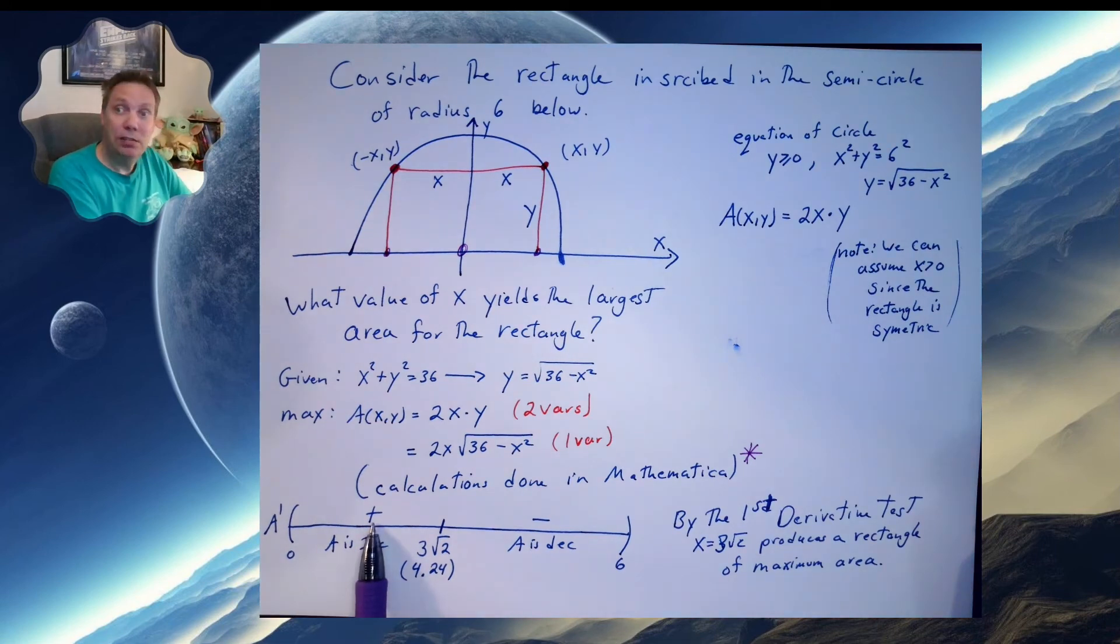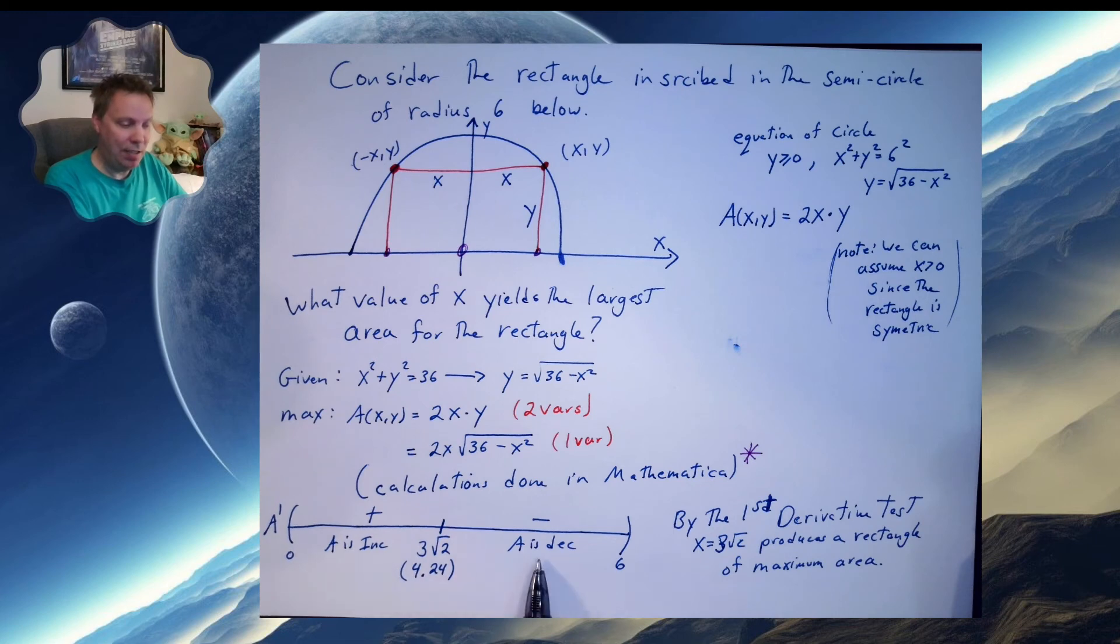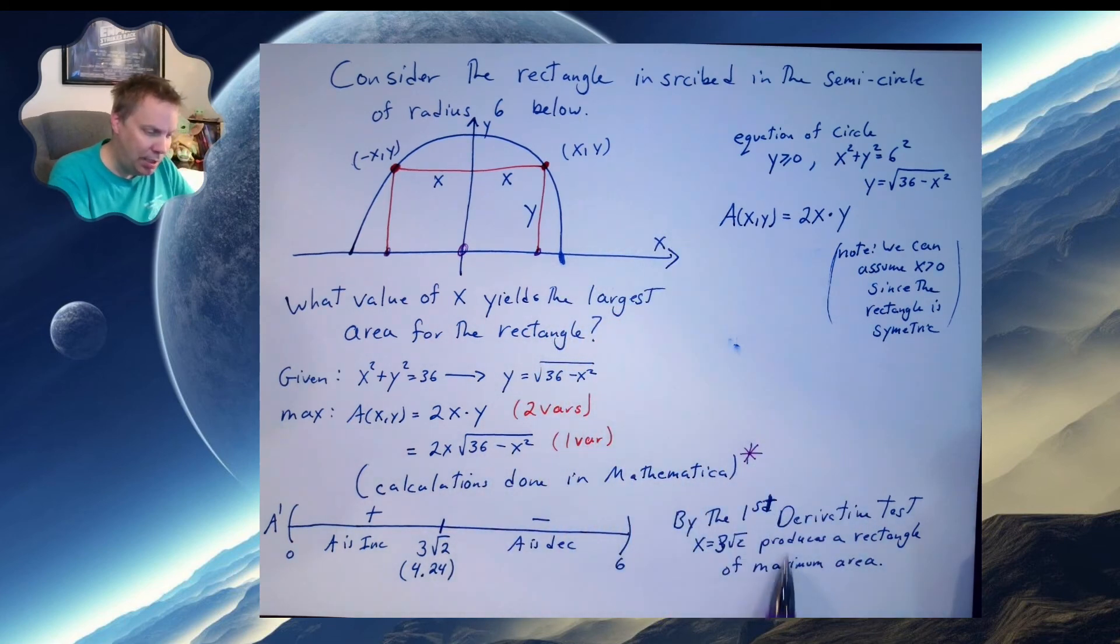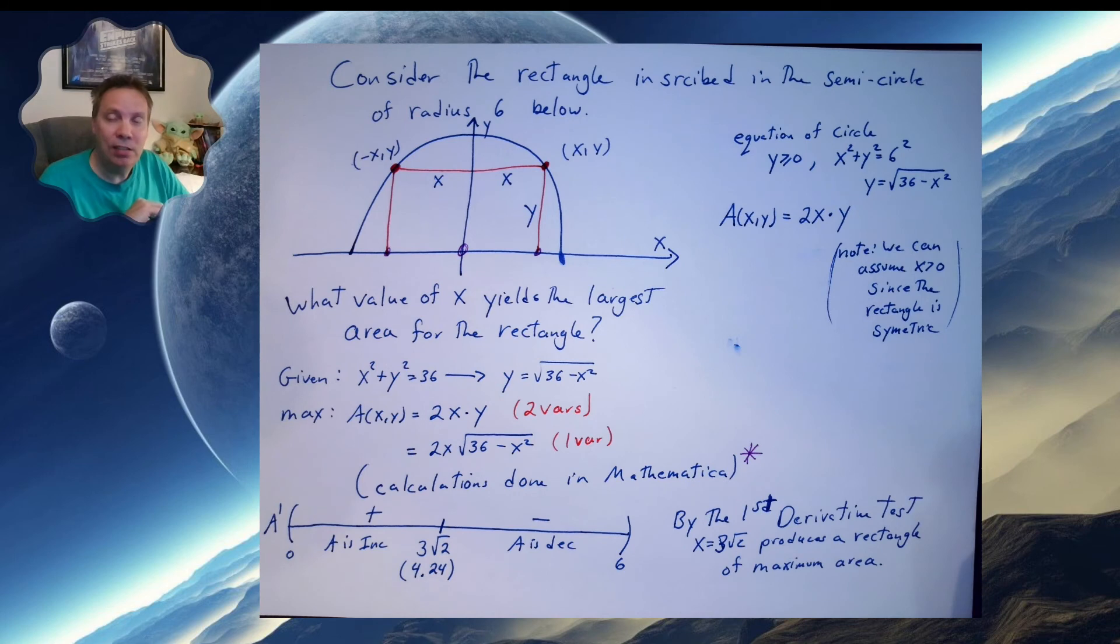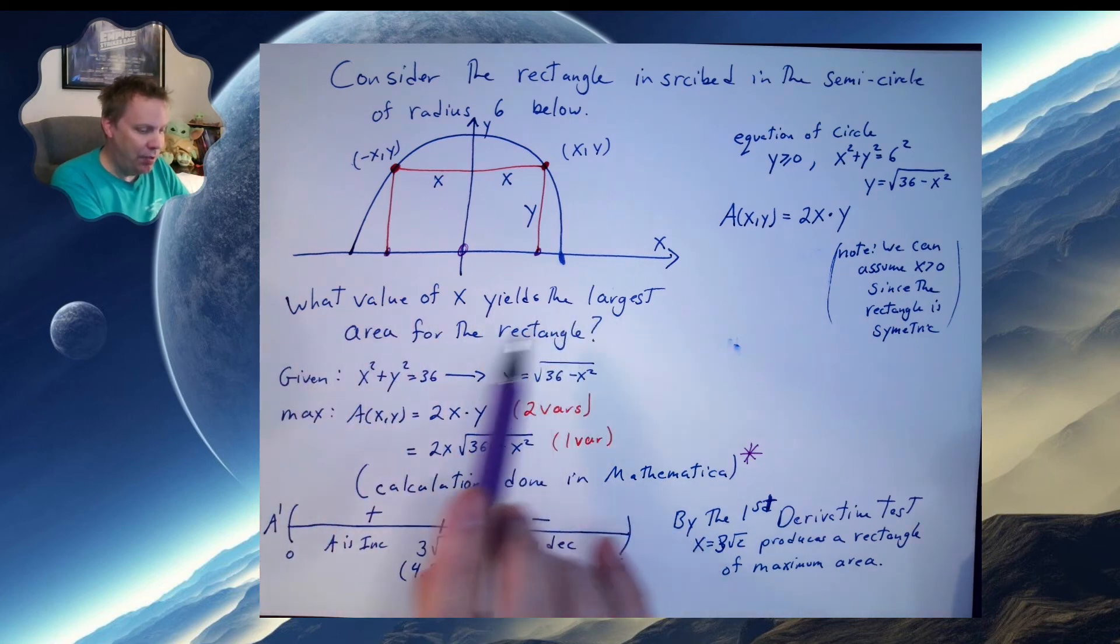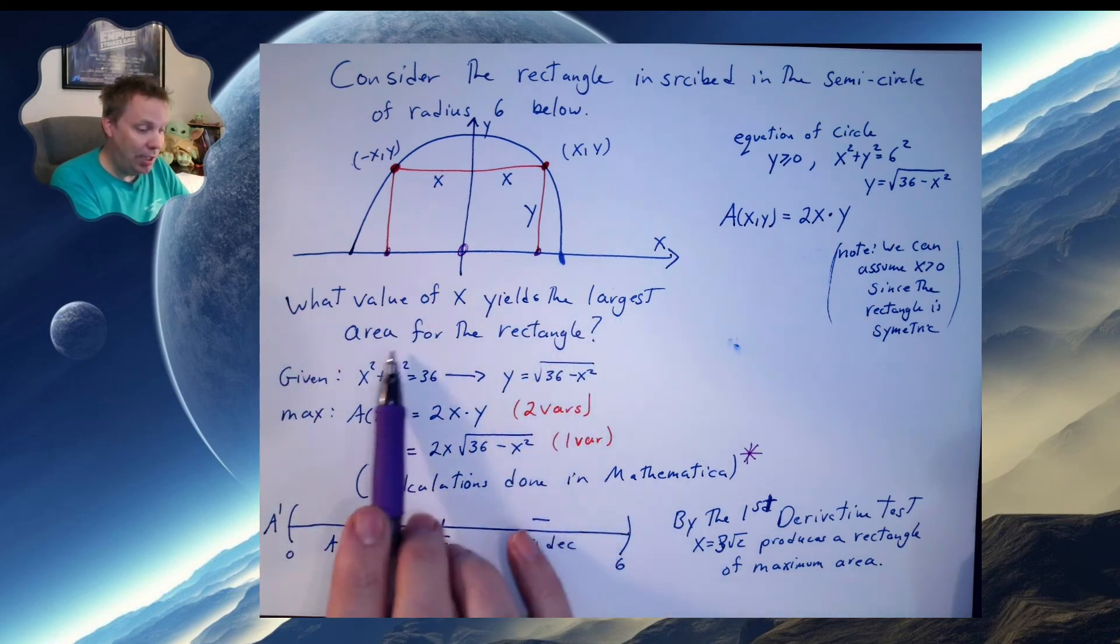A positive answer and a negative answer. This says A is decreasing and A is, sorry, I said that wrong. A is increasing and A is decreasing. So by the first derivative test, I know that I have an increasing-decreasing nature. That's what this says. And it produces a rectangle of maximum area. Now, does this answer my question? What is the value of x that yields the largest area for the rectangle? Well, it's 3 root 2.